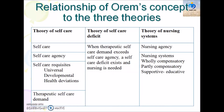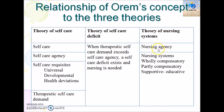Looking at the relationship of Orem's concepts to the three theories: the theory of self-care includes the concepts of self-care, self-care agency, self-care requisites (universal, developmental, and health deviation), and therapeutic self-care demand. In the theory of self-care deficit, when the therapeutic self-care demand exceeds the self-care agency, a self-care deficit exists and nursing is needed. In the theory of nursing systems, Orem addresses nursing agency and nursing systems, which have three categories: wholly compensatory, partially compensatory, and supportive-educative.